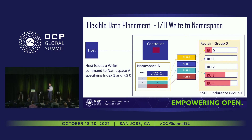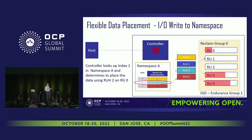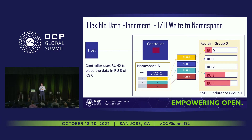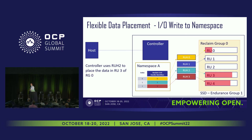As that comes into the controller, the first thing the controller does is take that index and look up: index 1, what reclaim unit handle am I going to use? It finds out it's going to use reclaim unit handle 2. The controller knows the tuple of the RUH and the reclaim group to where to write. It writes to reclaim unit handle 2, goes through that write resource, and actually writes it to RU3 that's currently being referenced by RUH2. The data is written — the host placed the data.